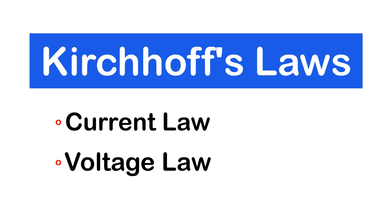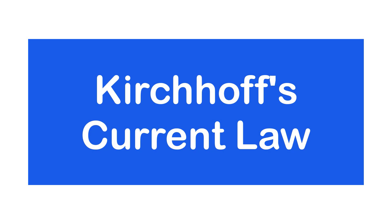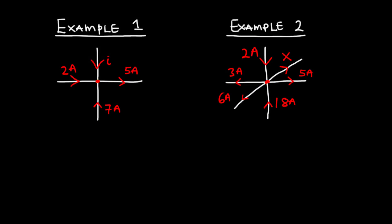In today's video we are going to talk about Kirchhoff's laws. These laws form the basis for all network analysis. They are called Kirchhoff's Current Law and Kirchhoff's Voltage Law. Now the current law states that the algebraic sum of currents arriving at a junction is equal to the algebraic sum of currents leaving that junction, or the algebraic sum of currents at a junction at any instance is equal to zero. Let's try some examples.